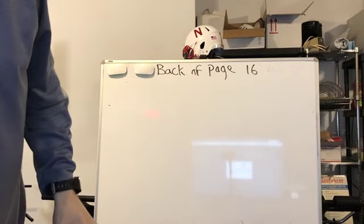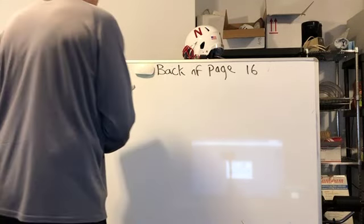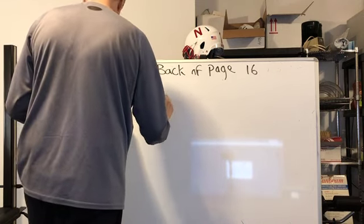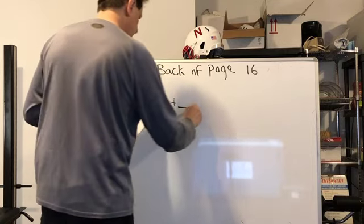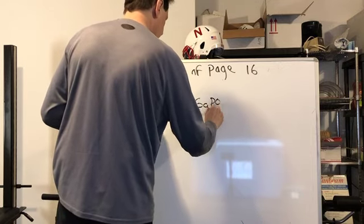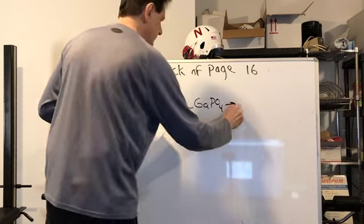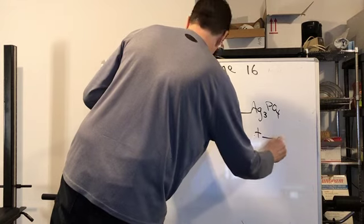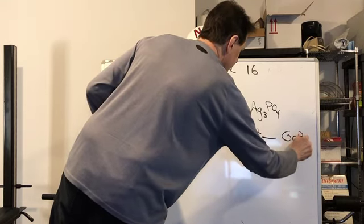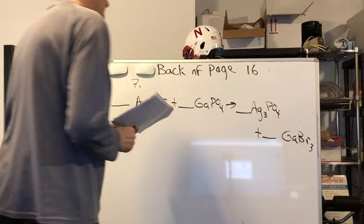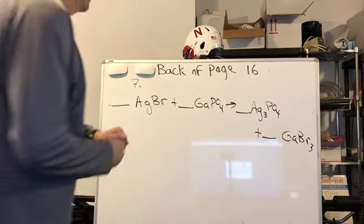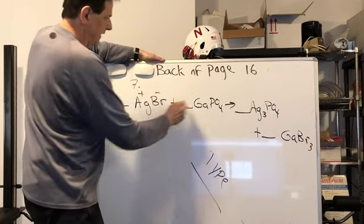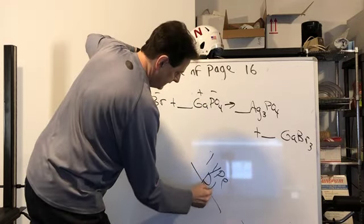Number seven. Let's see, we got AgBr plus GaPO4 to Ag3PO4 plus GaBr3. Here we got some work to do. Again, type cation anion, cation anion, that makes it double.